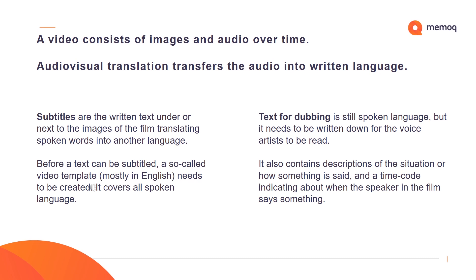Text for dubbing is still spoken language, but it needs to be written down for the voice artist to read. It also contains a description of the situation or how something is said, and a timecode indicating about when the speaker in the film says something.